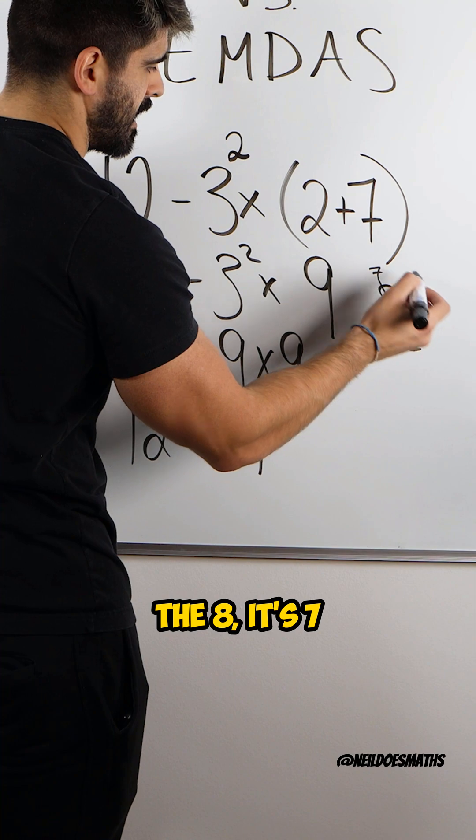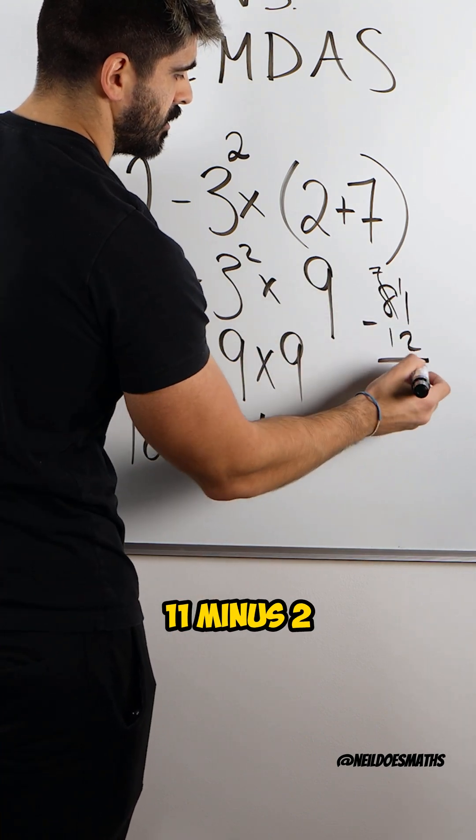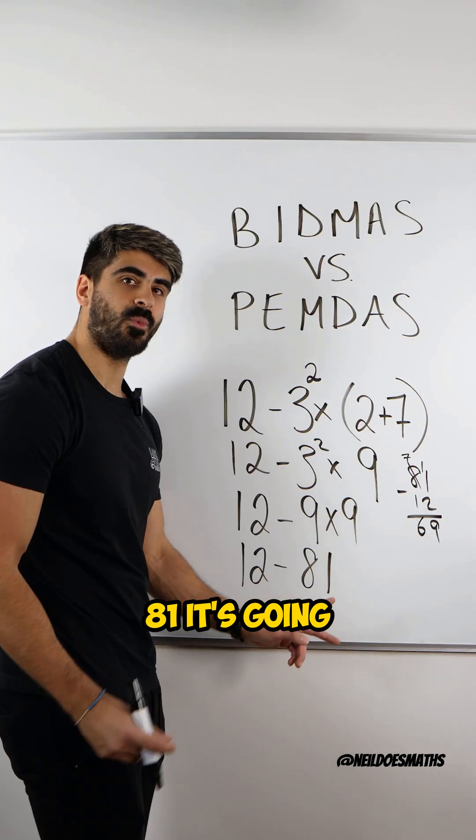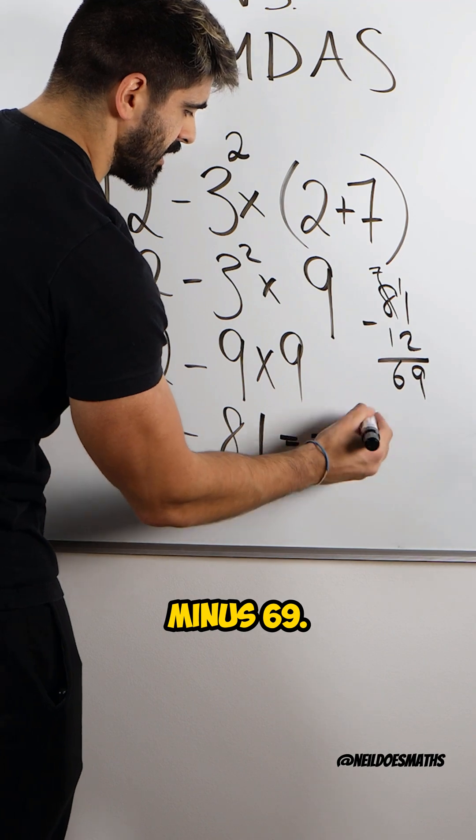Easy peasy, squeeze the lemon. We borrow from the eight, it's seven. Eleven minus two is nine. And then we get six. But because we're doing 12 minus 81, it's going to be negative. So we get minus 69.